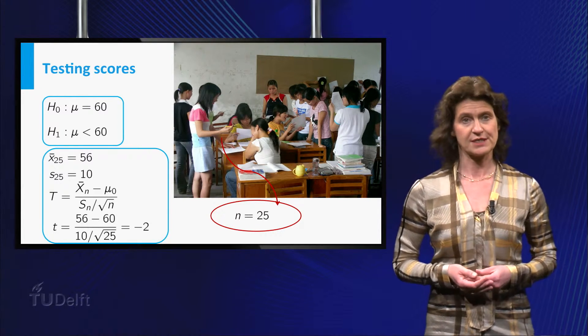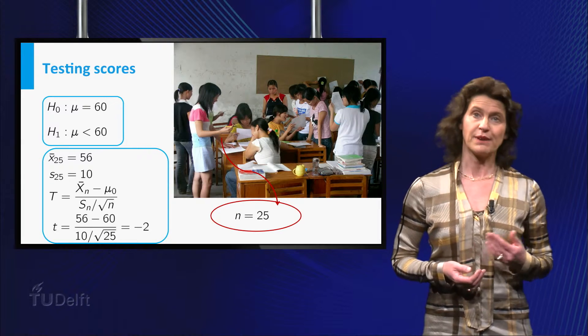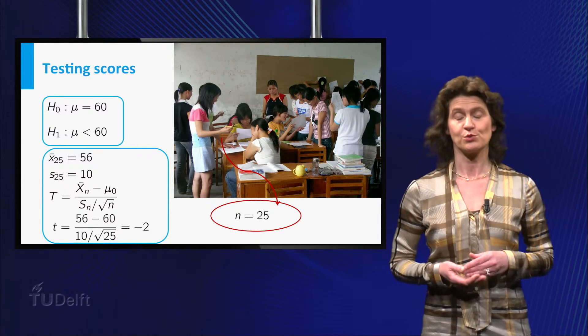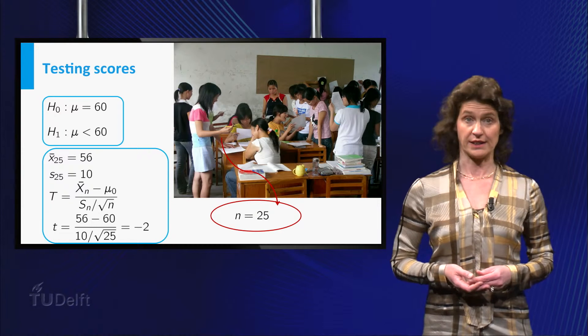So the value of t is small t, which is equal to 56 minus 60, divided by 10, divided by the square root of 25, which is minus 2.